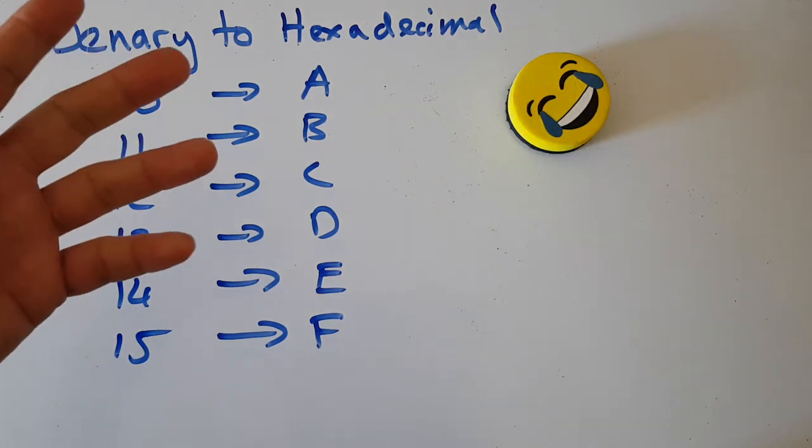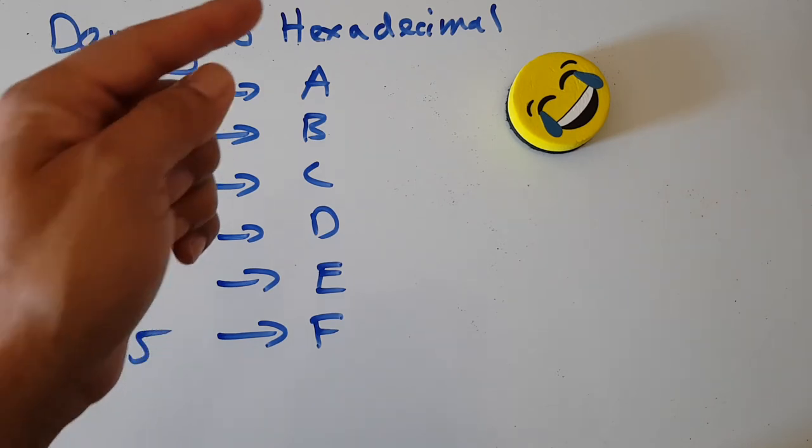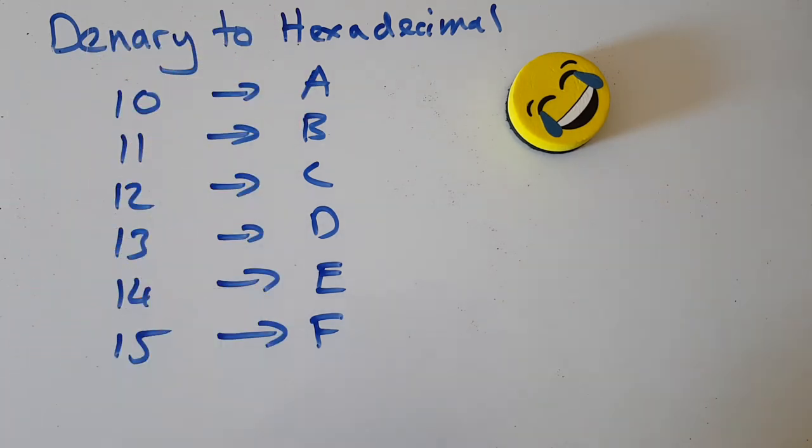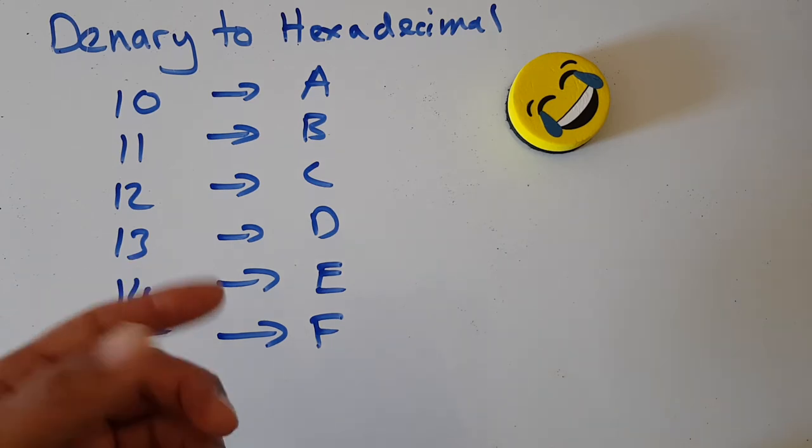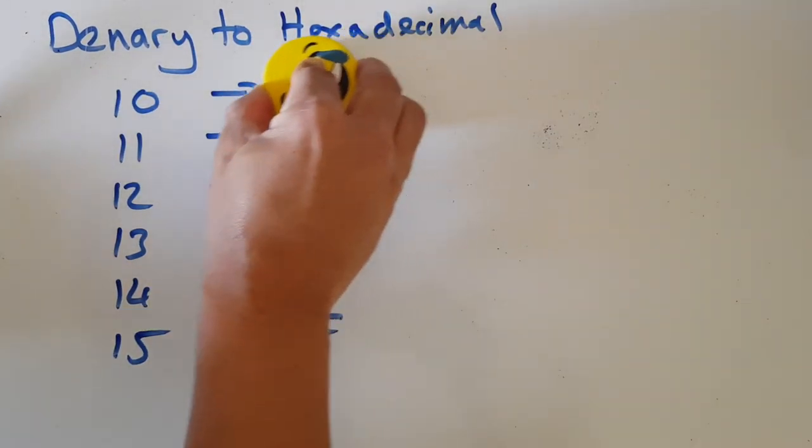Here's the answer: zero, one, two, three, four, five, six, seven, eight, nine, A, B, C, D, E, F. And that's how you count from nought to 15 in hexadecimal. That's it. Okay, so here are some quick questions.